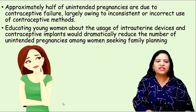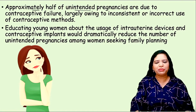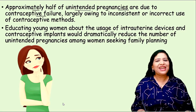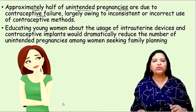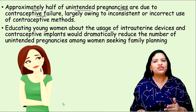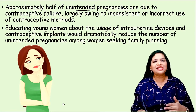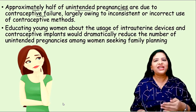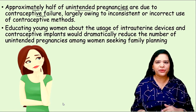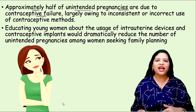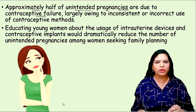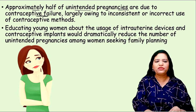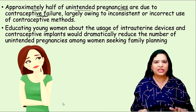Approximately half of the unintended pregnancies are due to contraceptive failures. Many young people don't know how to use birth control methods. As mentioned, if copper T has an expiry date and after that expiry date she doesn't go to remove it and insert a fresh IUD, it won't have sufficient copper molecules and may lead to failure. Contraceptive failure is the major reason for MTPs.